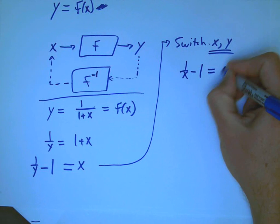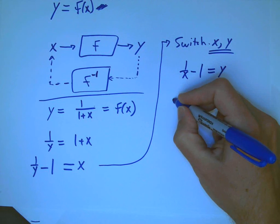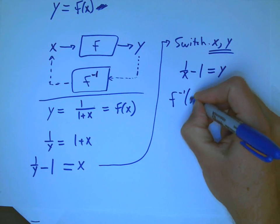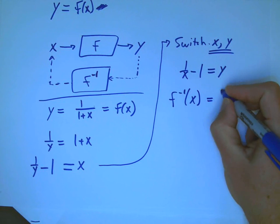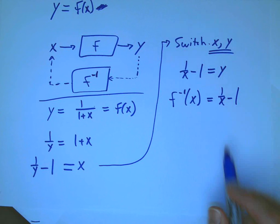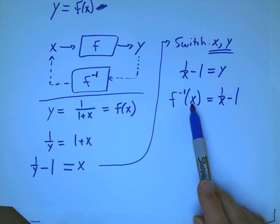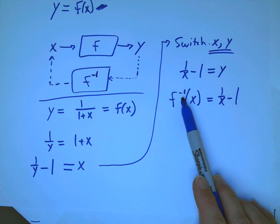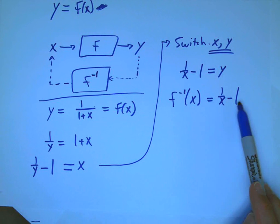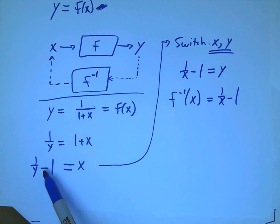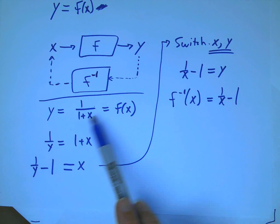And now we just say that we switch x and y and we rewrite this equation as 1 over x minus 1 equals y. Or in other words, f inverse of x, the formula that takes some input and produces the output of f inverse is 1 over whatever that thing is minus 1.